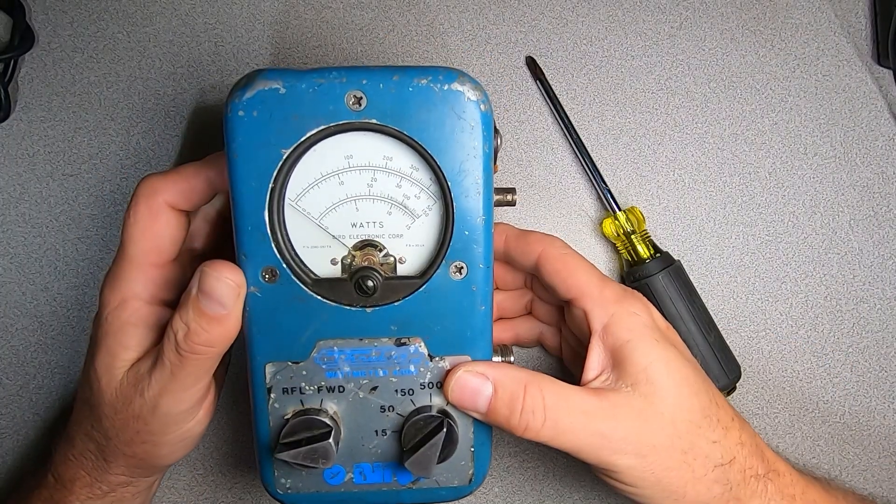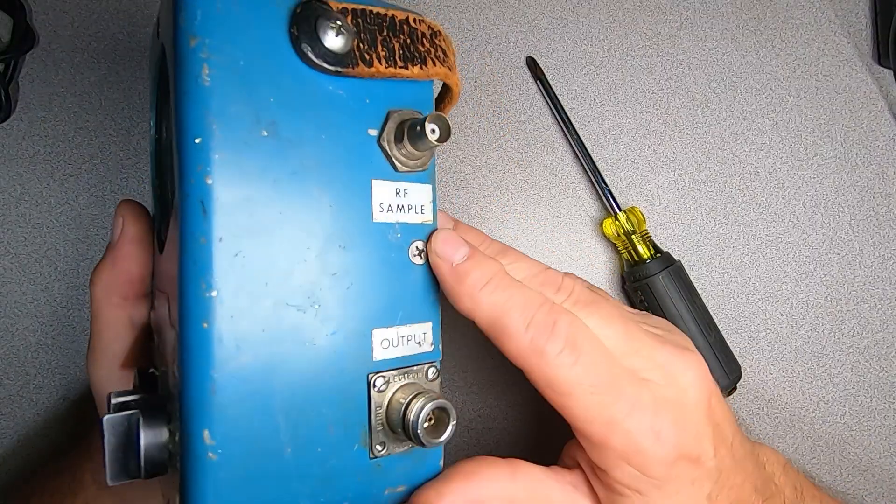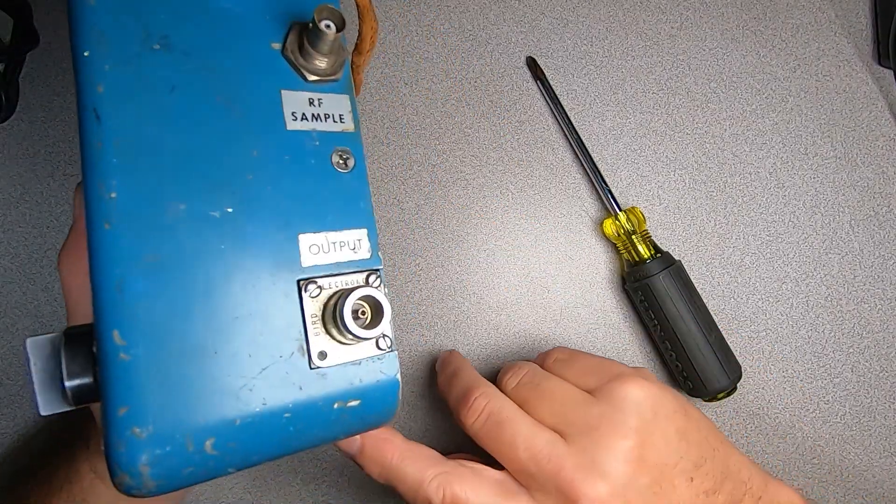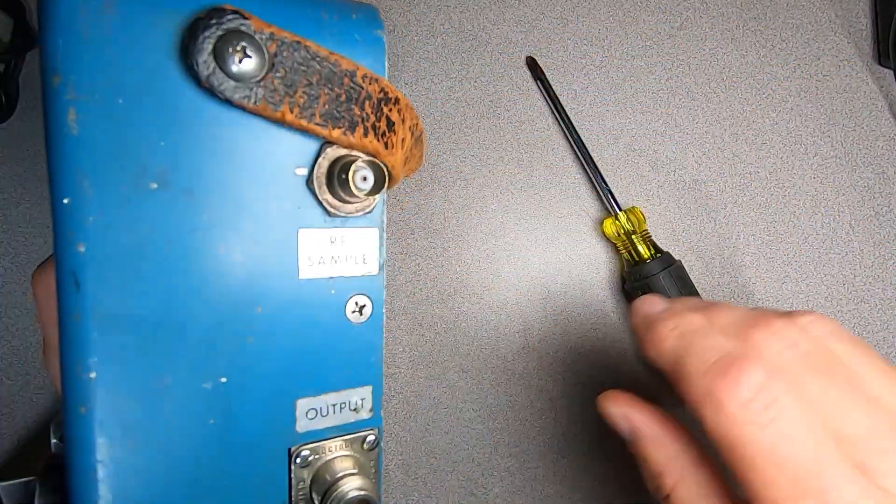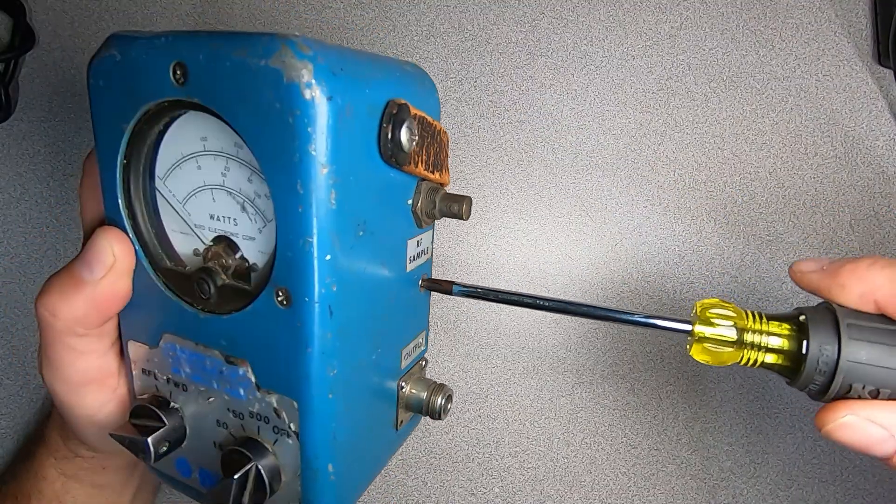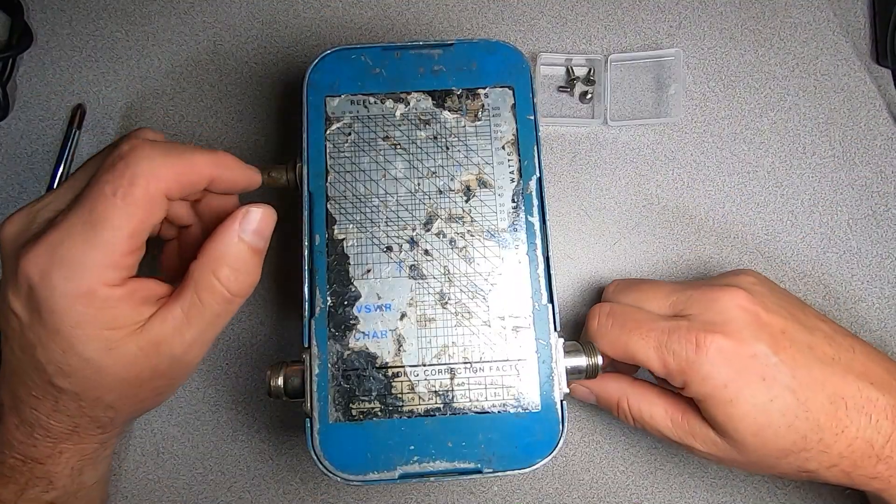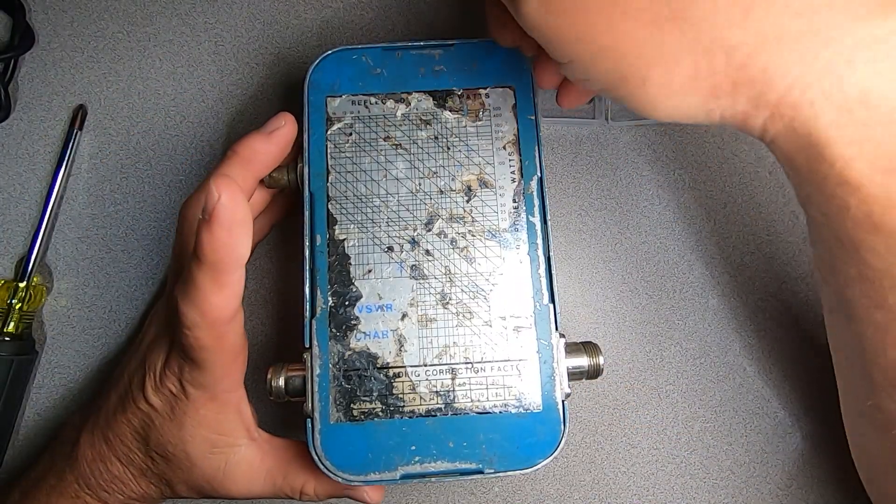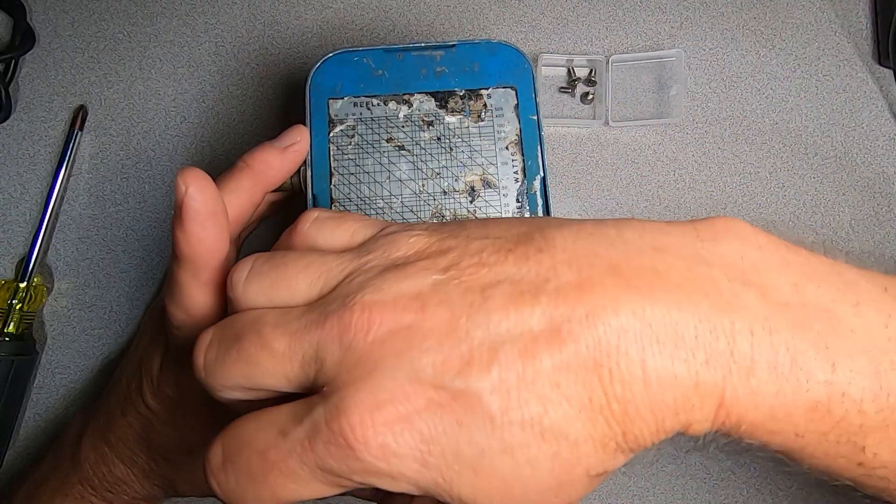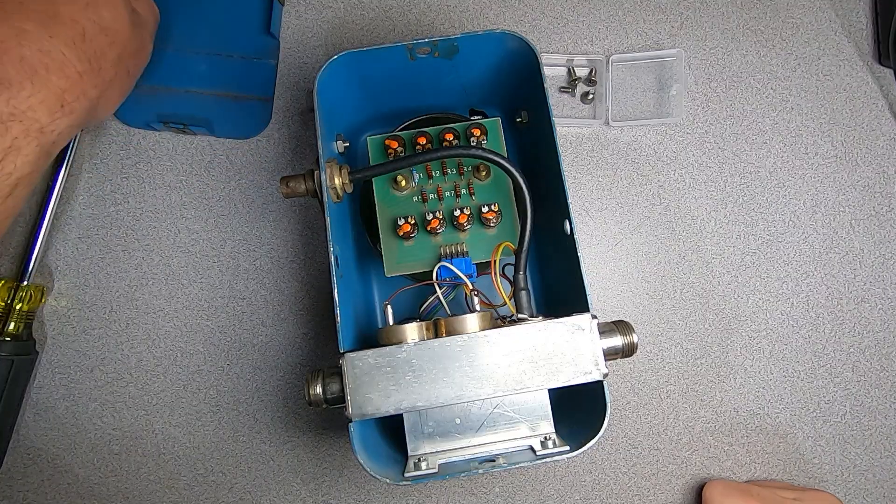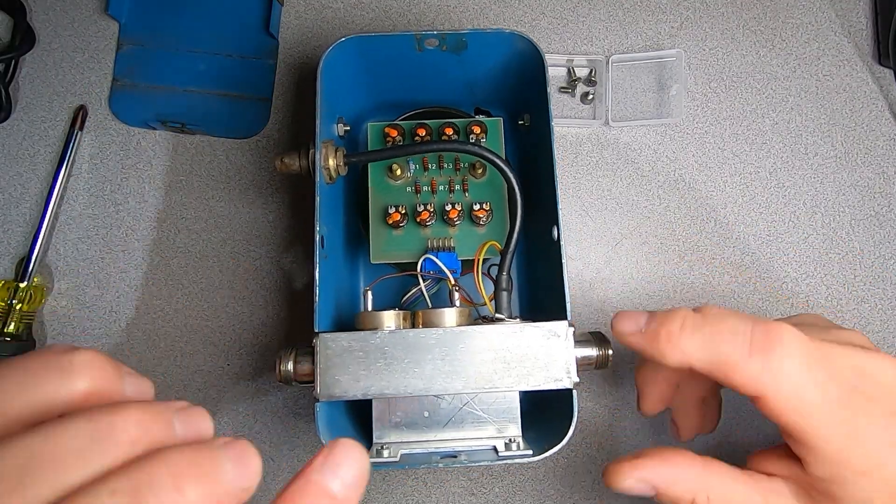To gain access to the interior of the meter, we're going to remove these Phillips screws from around the perimeter. Once we've removed our screws, the back cover can be removed and we have access to the inside of our meter.